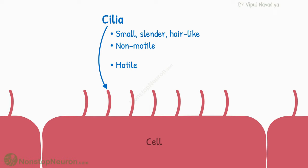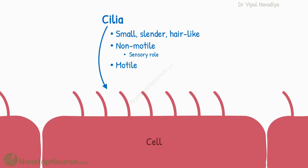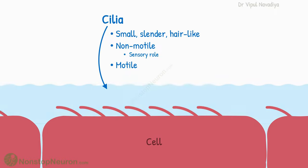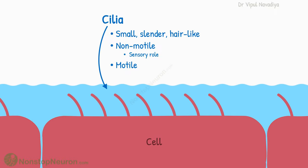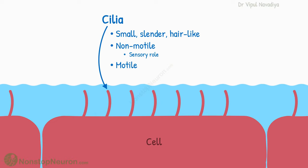Non-motile cilia do not move on their own — they play a sensory role. Motile cilia, on the other hand, can move, and their motion moves the fluid on the surface of the cell. In this video, we will talk about motile cilia only.